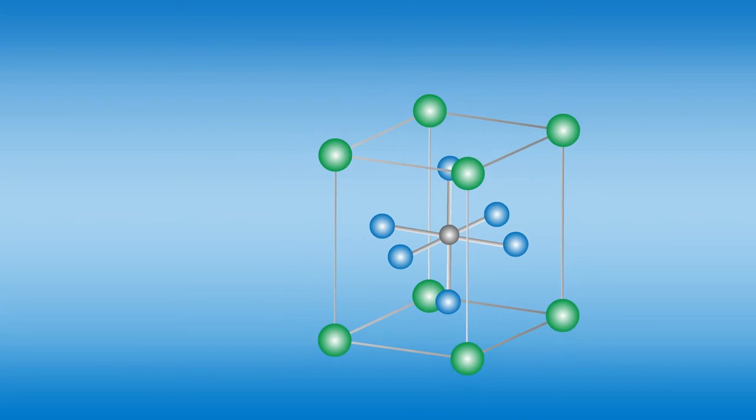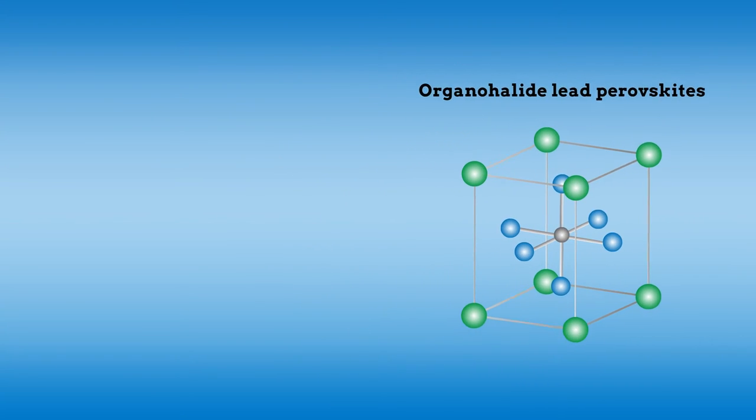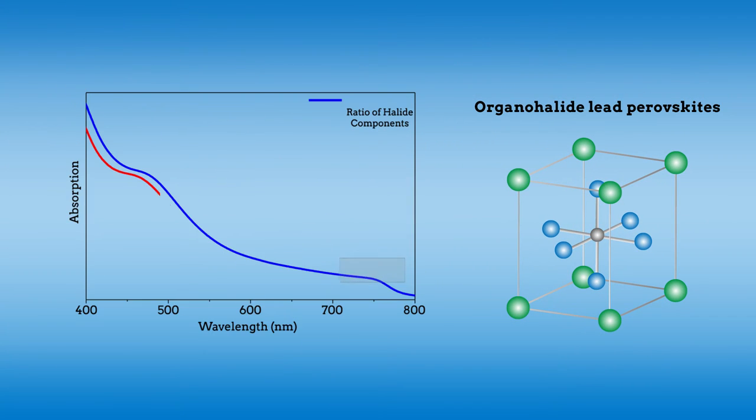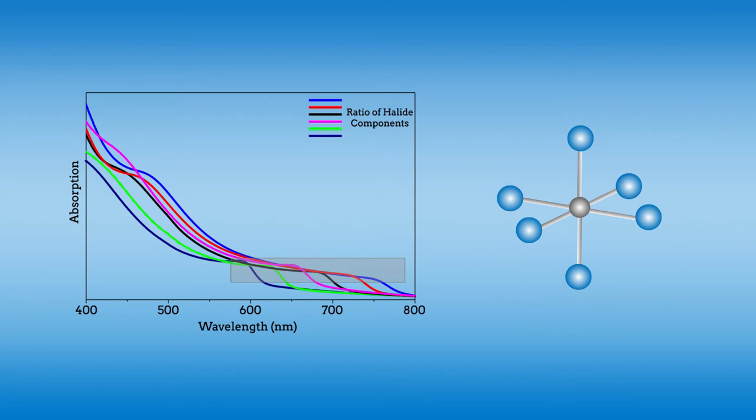For setting an upper absorption limit, organohalide lead perovskites are advantageous because their absorption range can be easily tuned by adjusting the ratio of their halide components. Setting the lower bound of absorption, however, required a more drastic adjustment to the absorption spectrum of the active material depending on the color detected.